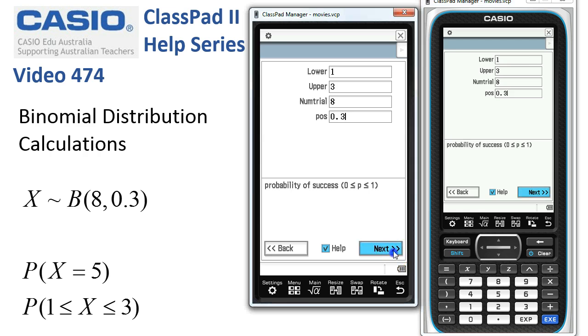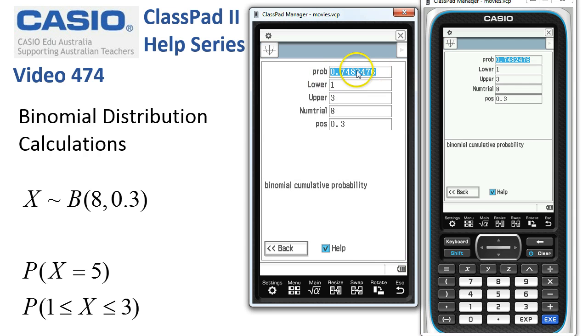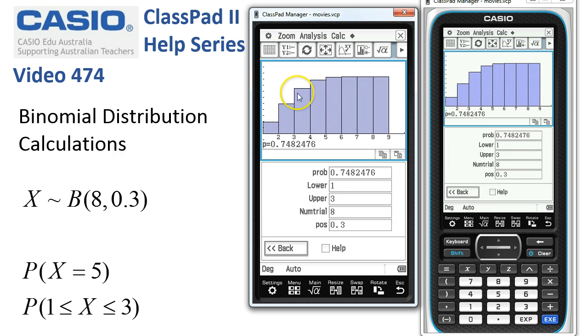Now when we tap next, the probability as we expected is much larger, 0.75 nearly. And again, if we have a look at the graph, this is the cumulative graph that we've got this time.